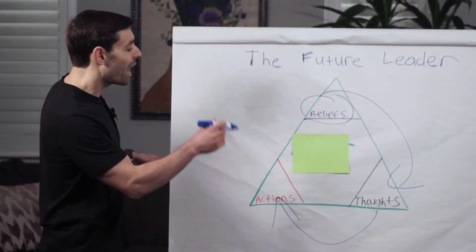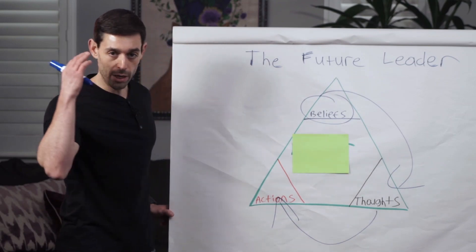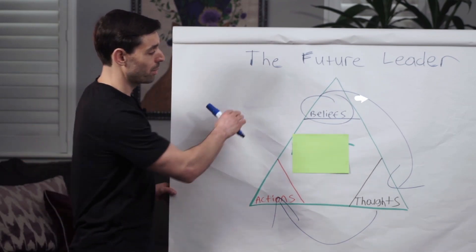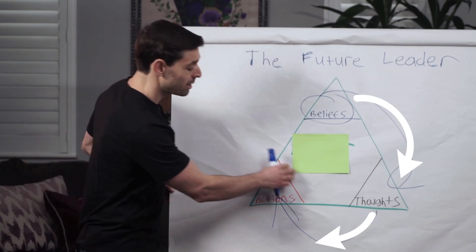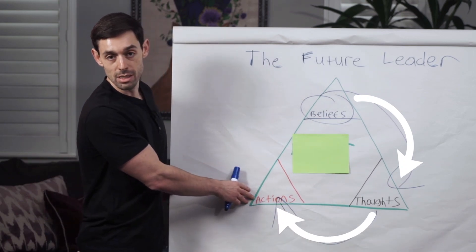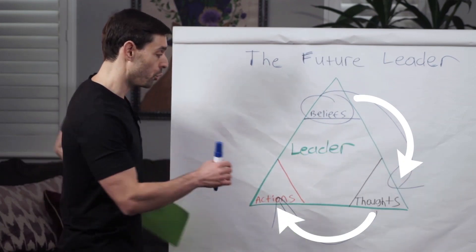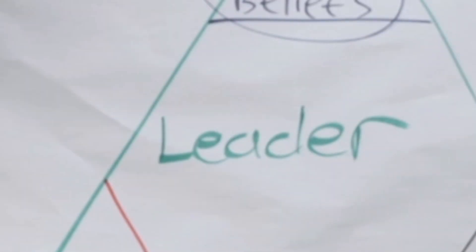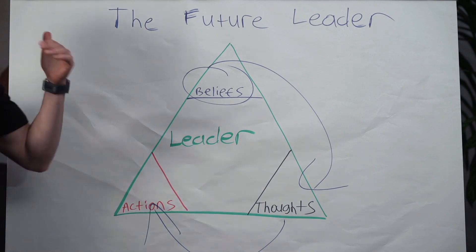So you can see how this kind of comes full circle. Your North Star, how you think about life and leadership, will dictate the thoughts that you have. The thoughts that you have will then dictate the actions that you take. And all of these things are what make you the leader that you are. And this is why I call this the golden triangle of leadership, because this is what is going to shape who you are as a leader.